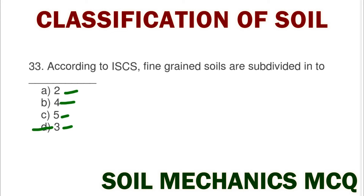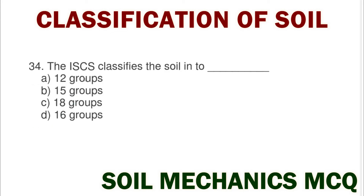Next question: as per the IS classification system, the soil is classified into option A 12 groups, option B 15 groups, option C 18 groups, option D 16 groups. The correct answer is option C 18 groups.